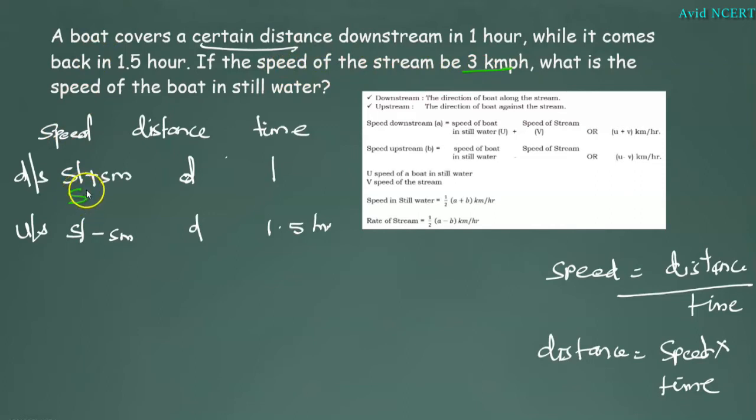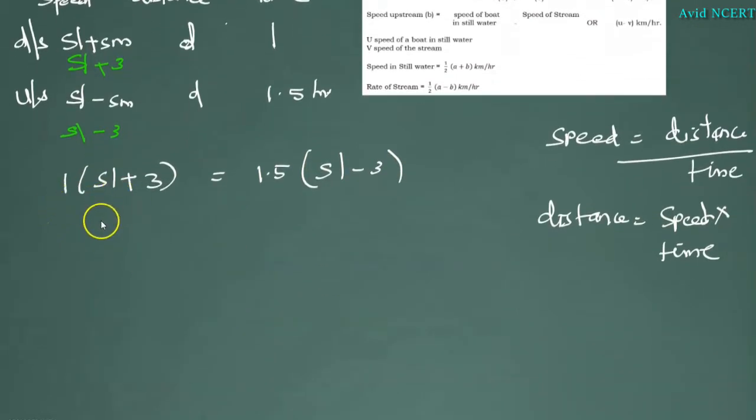Which is SL plus 3 and here SL minus 3. First case distance is speed into time which is 1 into SL plus 3 equals 1.5 into SL minus 3 is 4.5. 1 into SL is SL plus 3 into 1 is 3 equals 1.5 into SL is 1.5 SL minus 3 into 1.5 is 4.5.